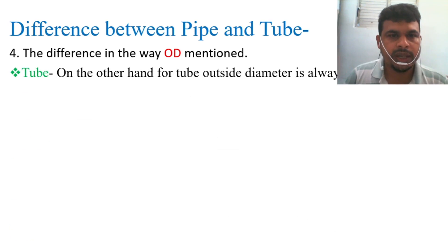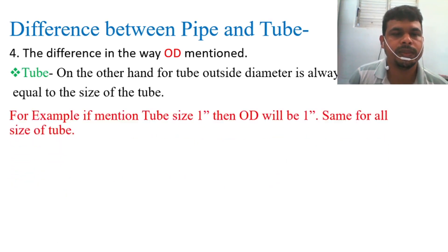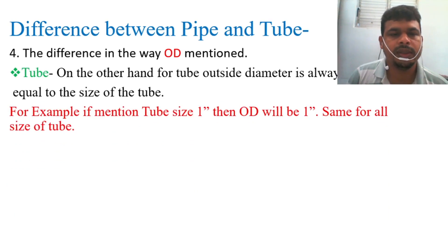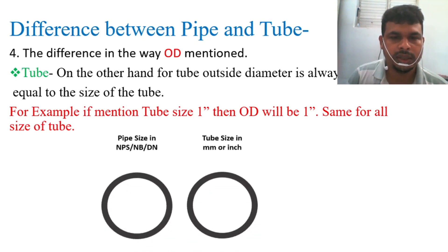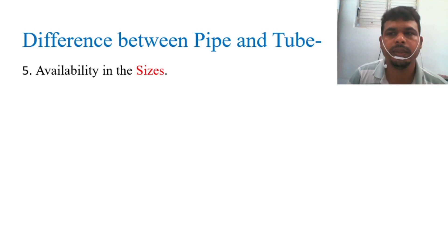For tube: on the other hand, for tube outside diameter is always equal to the size of the tube. For example, if mentioned tube size is 1 inch, then OD will be 1 inch, same for all sizes of tube. So if the tube size is 1 inch, then you are going to consider outer diameter to be 1 inch.